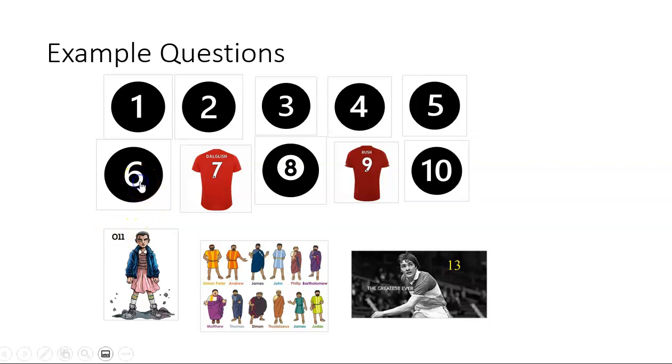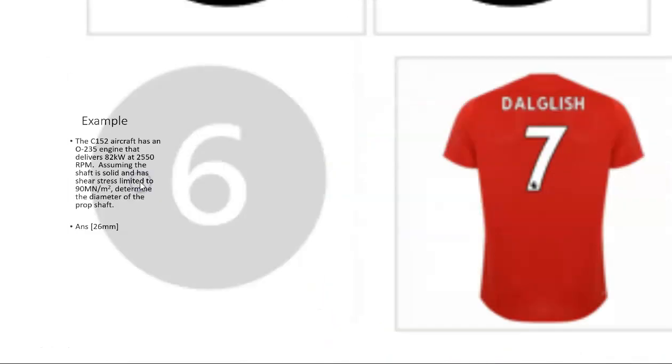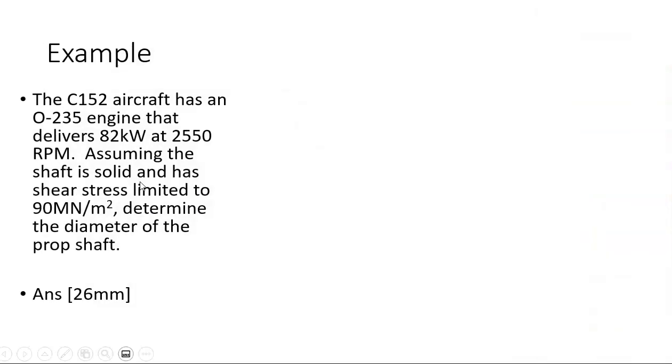We're going to look at example 6 now. We're told a Cessna 152 aircraft has an O235 engine that delivers 82 kilowatts at 2,550 revs per minute. Assuming the shaft is solid and has a shear stress limited to 90 MN per meter squared, determine the diameter of the propeller shaft.